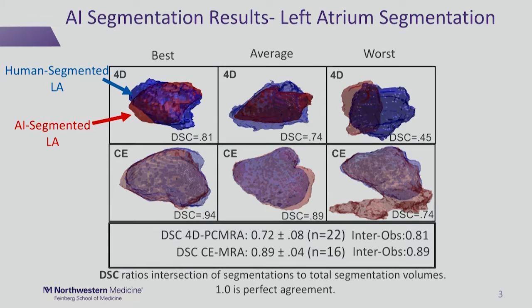We can see the results just for the left atrium, as that's the basis of our registration workflow, for the 4D flow and the contrast-enhanced scans, showing best, average, and worst cases for the cohort — the human-segmented LA in blue and the AI segmentation in red.